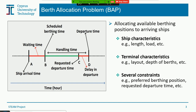Berth allocation is a first and fundamental decision problem at the maritime container terminal, where allocating available berthing positions to arriving ships is known as the berth allocation problem. This decision depends on several elements: ship characteristics such as length and total load, terminal characteristics such as berthing layout — discrete or continuous — depth of berth, and constraints such as preferred berthing position, requested departure time, or preferred berthing queue.